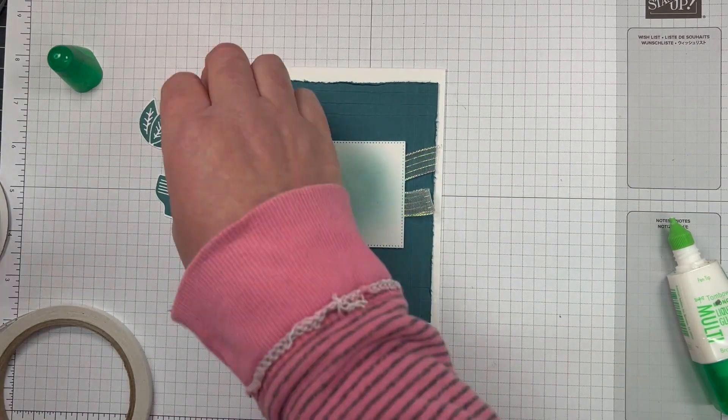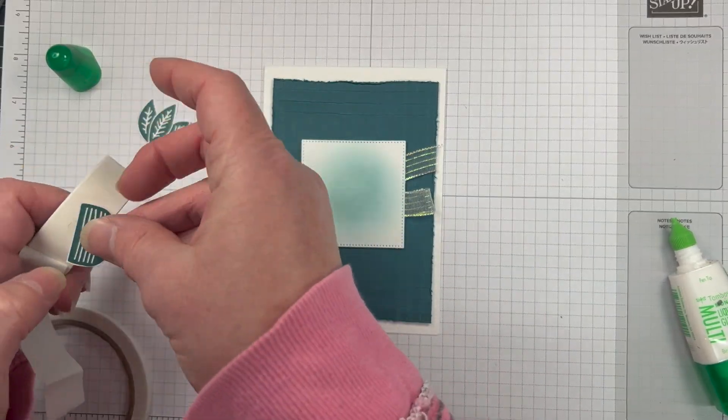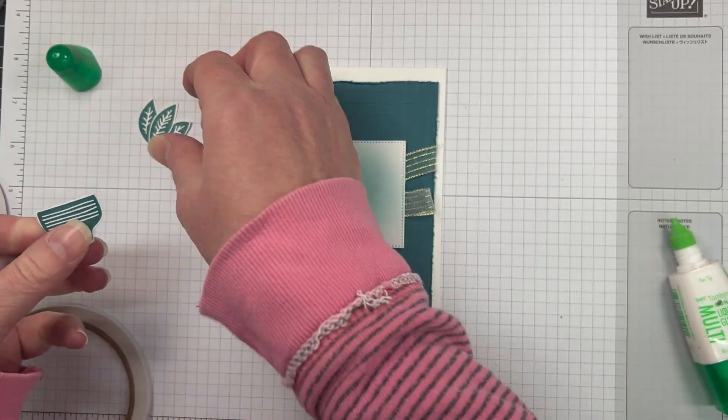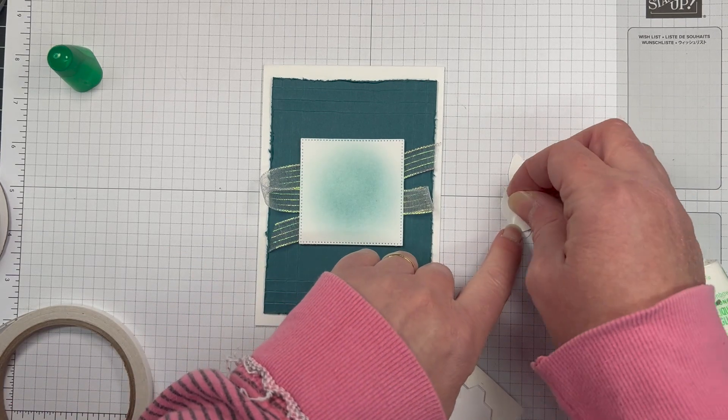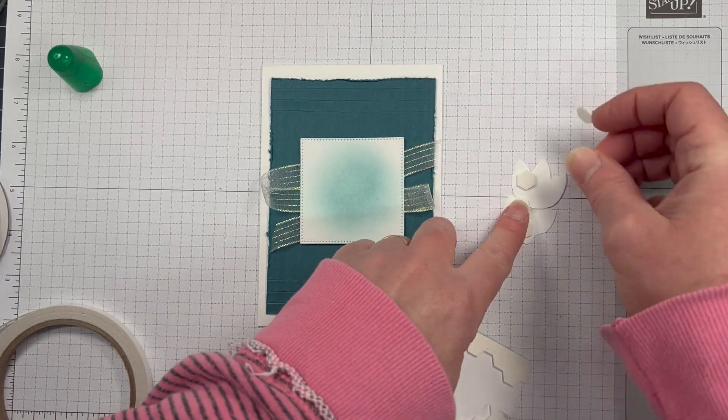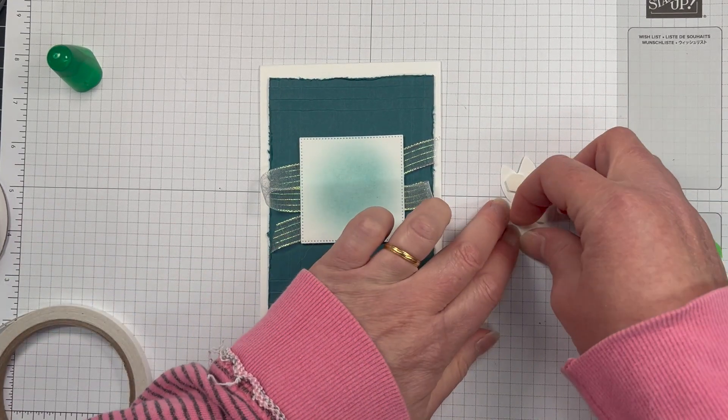And to finish it off, I'm going to also bring in some beautiful embellishments. Now, these are Pretty Peacock and gold, I believe—so, no, petal pink and Pretty Peacock foil gems.